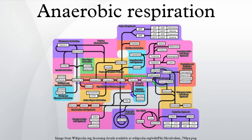Anaerobic respiration, as compared to fermentation, utilizes highly reduced species such as NADH and FADH2 to establish an electrochemical gradient across a membrane, resulting in an electrical potential or ion concentration difference across the membrane. The reduced species are oxidized by a series of respiratory integral membrane proteins with sequentially increasing reduction potentials, with a final electron acceptor being oxygen or another species.